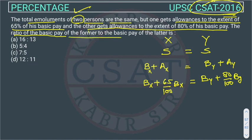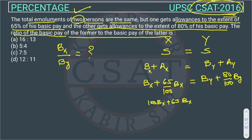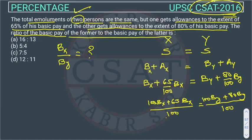The question asks for the ratio of the basic pay of the former to the basic pay of the latter — that is, basic pay of X to basic pay of Y. From the given condition that total emoluments are equal, we can set up the equation: 100·Bx + 65·Bx over 100 equals 100·By + 80·By over 100, which simplifies to 165·Bx equals 180·By.